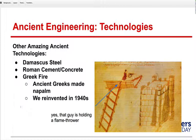This guy is holding a flamethrower. Ancient Greeks made napalm — we reinvented it in the 1940s. Greek fire is something like napalm: you can drop it in water, it still burns. It's very nasty stuff.